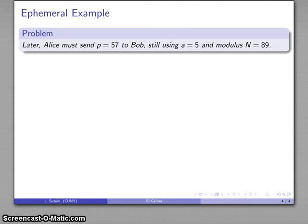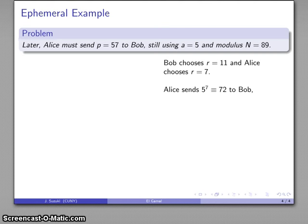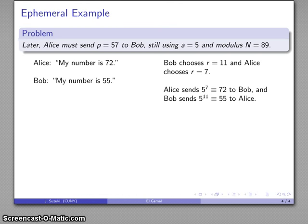It's used once, and then the next time you send a message, you use a different key. So, maybe the next time Alice has to send Bob a message, and they re-select exponents. So, Bob chooses 11, and Alice chooses 7 as her exponent. So, let's see. Alice sends 5 to power 7, 72 to Bob. Bob sends 5 to power 11, 55 to Alice.